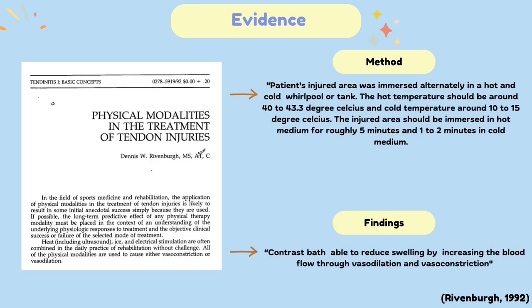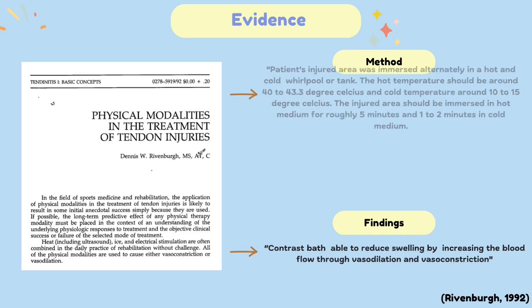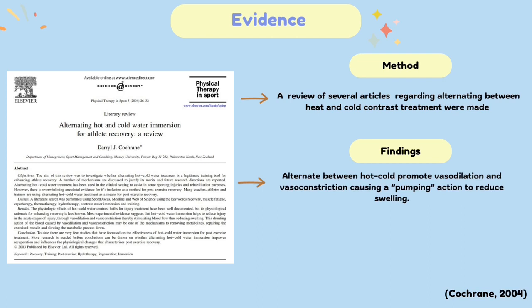Next, in a study conducted by Rivemberg in 1992, patients were instructed to immerse their injured area alternately in a hot and cold tank or whirlpool. The study used a time ratio of 5 to 2, at temperatures of around 40 to 43.3 degrees Celsius for hot and 10 to 15 degrees Celsius for cold water. It was found that contrast bath treatment reduced swelling by increasing blood flow through vasodilation and vasoconstriction. Lastly, in an article by Cochrane in 2004, a review of several studies on contrast water therapy for athletes found that alternating hot and cold water promotes vasodilation and vasoconstriction, causing a pumping action that reduces swelling in the injured area.